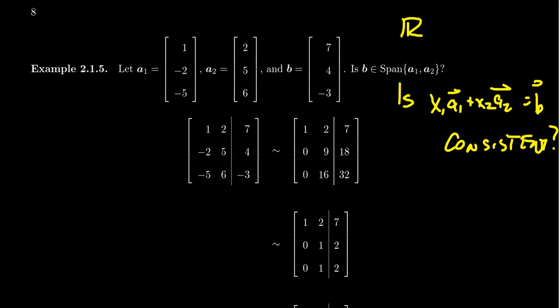And this equation can be solved using this augmented matrix where the first column is a1, the second column is a2, and the last column is b. Putting your pivot position in the 1,1 position, to go down, you're going to have to take row 2 plus 2 times row 1, and row 3 plus 5 times row 1.